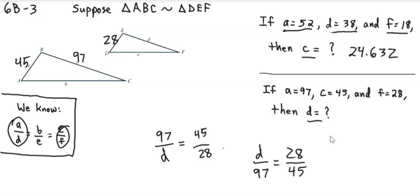So I'm not going to use that method. What I am going to do is tell you that with proportions, 97 over D is the same thing as D over 97 equals 28 over 45. If you have a fraction equals a fraction, and that's all you have, then you can flip over both of the fractions. But that's not the way I'm going to do it. I'm going to do what I call the long way.